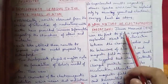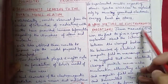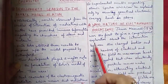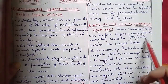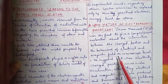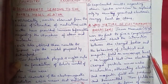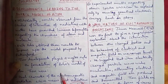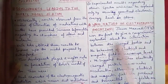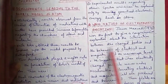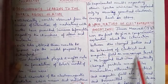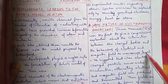Starting with the wave nature of electromagnetic radiation: James Maxwell in 1870 was the first to give a comprehensive explanation about the interaction between charged bodies and the behavior of electric and magnetic fields on the macroscopic level.